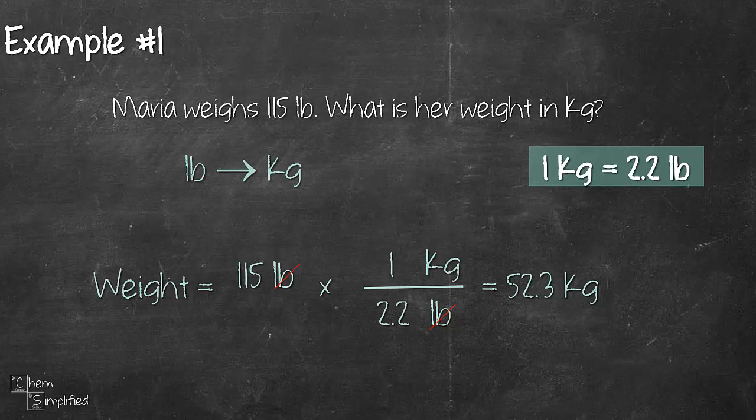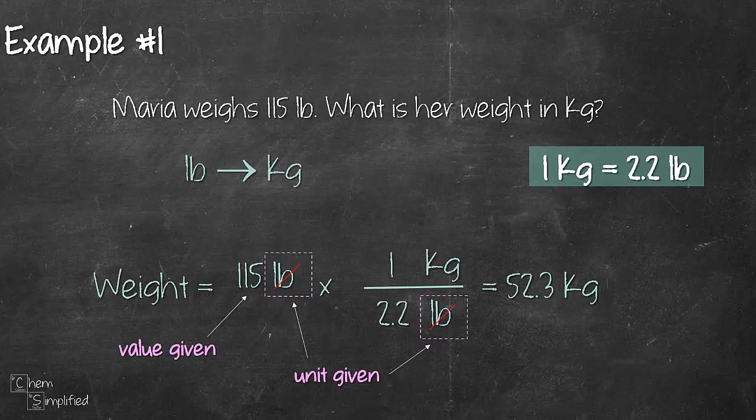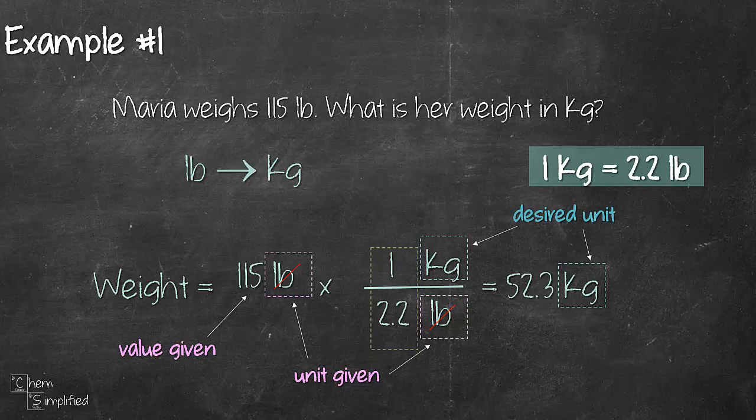Let's look through how we did that conversion. We started off by writing out the given value along with its given unit which is pounds. And then we place the given unit at the bottom so that we can cancel them off. Then we place the desired unit on the top. As for the values, we inserted the numbers we got from the relationship between the two units.